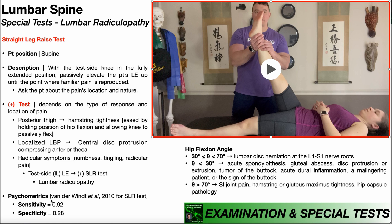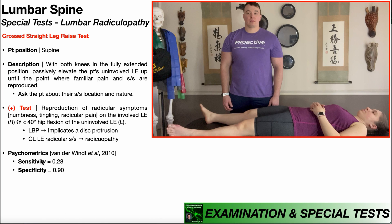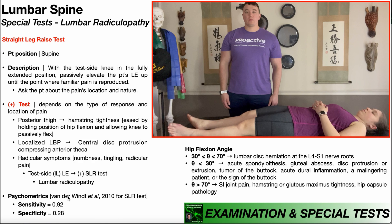The psychometrics of the straight leg raise test were assessed by Vanderwint et al. in 2010 for lumbar radiculopathy. They found a sensitivity of 92% and a specificity of 28%. The straight leg raise test should never be used to rule in a lumbar radiculopathy — that's saved for the crossed straight leg raise test, which has a 90% specificity. If this test is negative, there's a 92% chance the patient does not have a lumbar radiculopathy. If it comes out positive for radicular symptoms, you need to examine further, and your next test should be the crossed straight leg raise test.